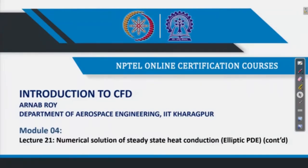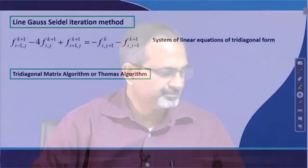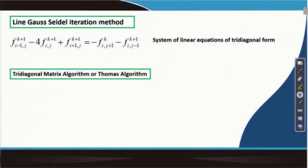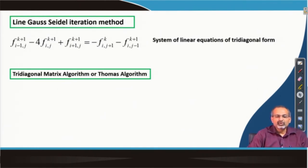In this lecture, we continue our discussion on application of the tri-diagonal matrix algorithm. In the previous lecture, we had discussed at length about how the tri-diagonal matrix algorithm, or the Thomas algorithm, functions for a system of linear algebraic equations which can be laid in a tri-diagonal form. We would like to reiterate that when we were discussing the Line Gauss-Seidel iteration method, that was the requirement — we needed the tri-diagonal matrix algorithm to solve the problem.